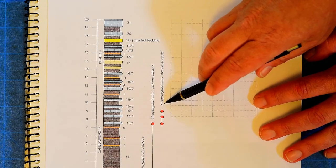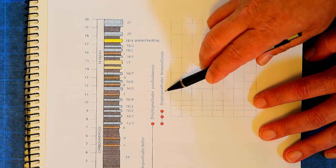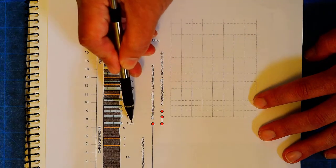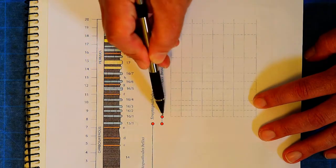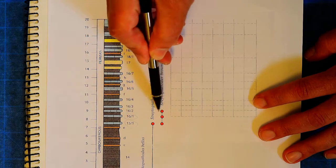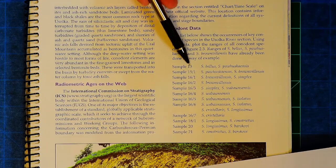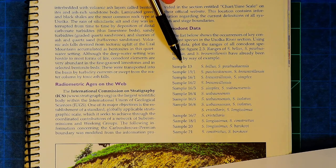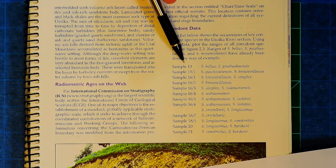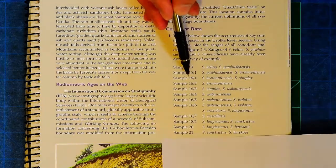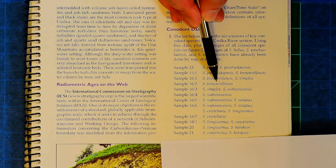So, for example, what this is telling you is this conodont Strepnogynathodos brownvalensis was found in rock unit 15-1, 16-1, and 16-2. Here you can see, all right, in sample, let's see, sample 13 was done. Let's go to sample 16-2, brownvalensis.